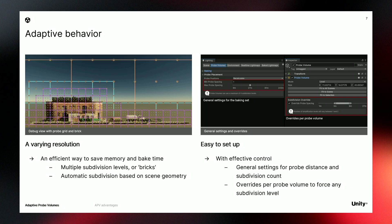The setup is automatic, but you can also get a lot of control. You have general settings for the minimum distance between probes, and you can also choose the number of subdivision levels you want. And you also have overrides per probe volume, so you can easily force one subdivision level for a specific area of your scene.